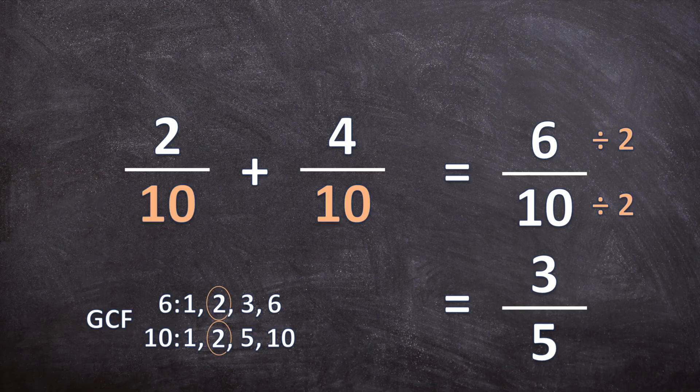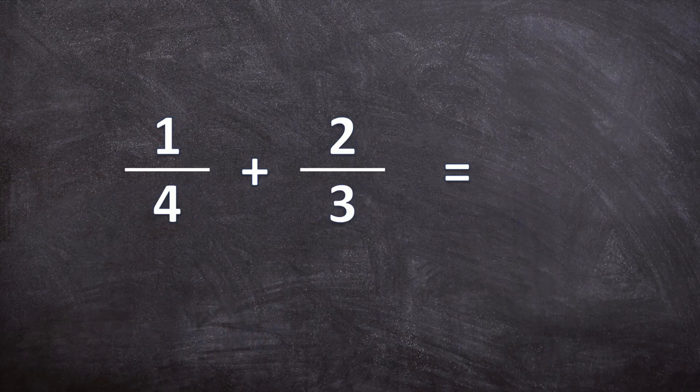Now let's look at another example: 1 over 4 plus 2 over 3. We need to get the denominators the same, but we cannot multiply 4 by anything to get 3, and we cannot multiply 3 by anything to get 4. So we need to find the lowest common multiple of 4 and 3, which is 12. We can multiply 4 by 3 to get 12, and multiply 3 by 4 to get 12.